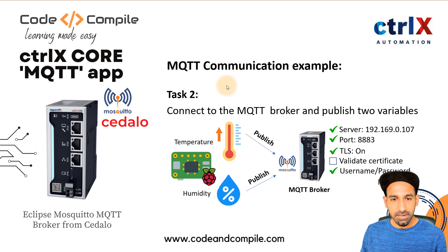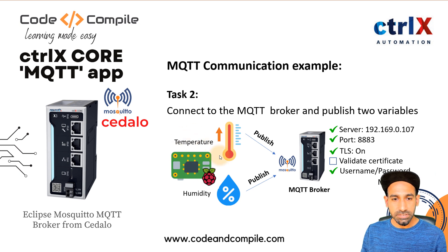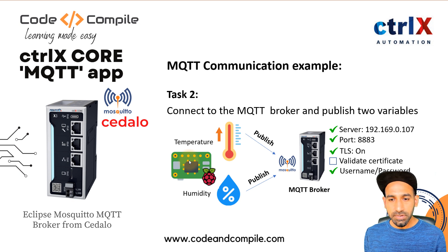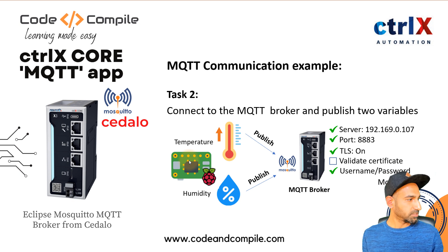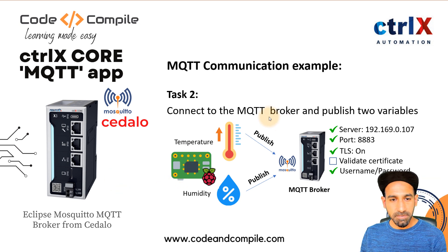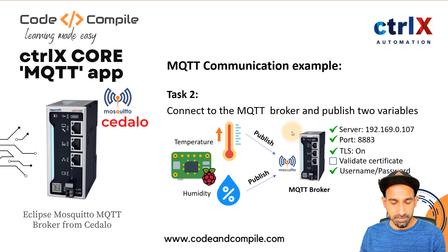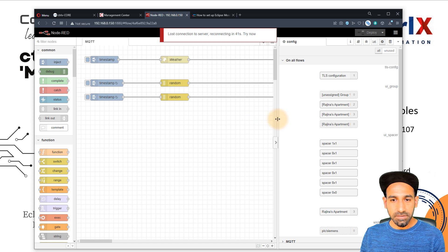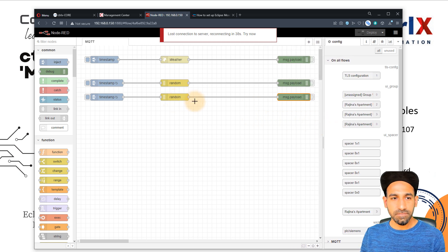Let's see the second task: connect to the MQTT broker and publish two variables. I've created this example where we have a Raspberry Pi transferring temperature and humidity values to the MQTT broker. I'll show you how to publish data from a hardware device — Raspberry Pi — to the Ctrl X MQTT broker. I already have Node-RED installed on my Raspberry Pi, and I'll use two random variables for temperature and humidity.